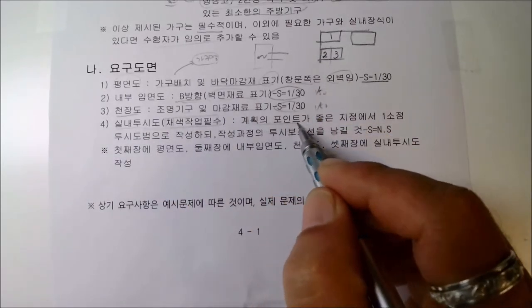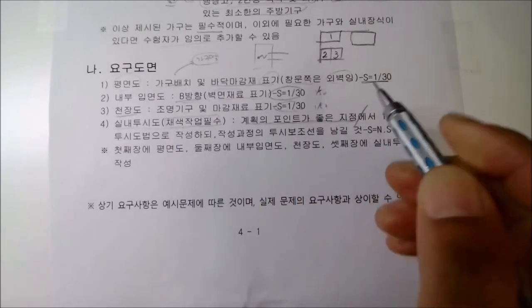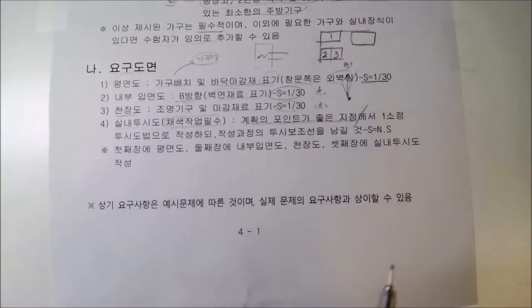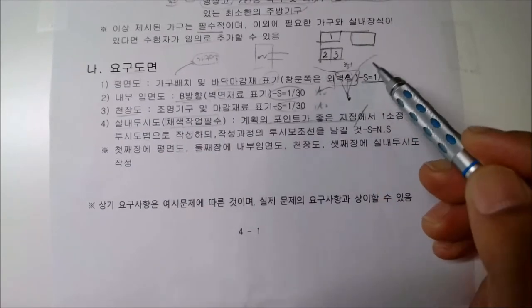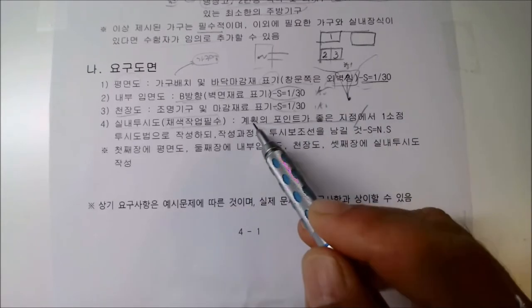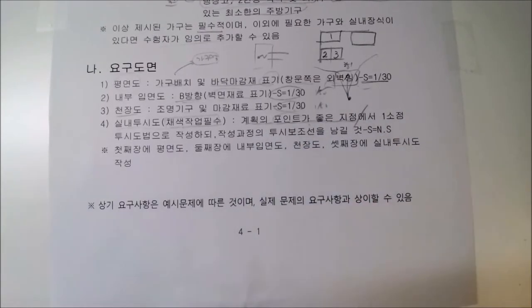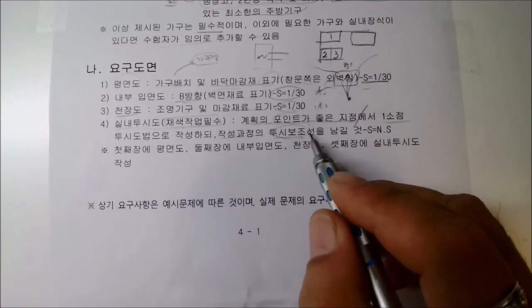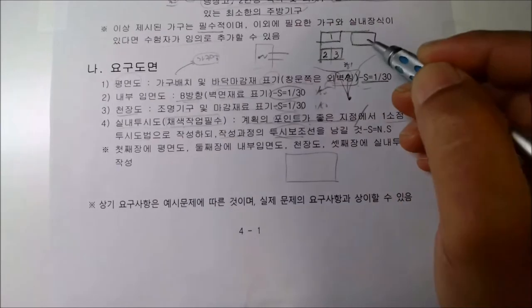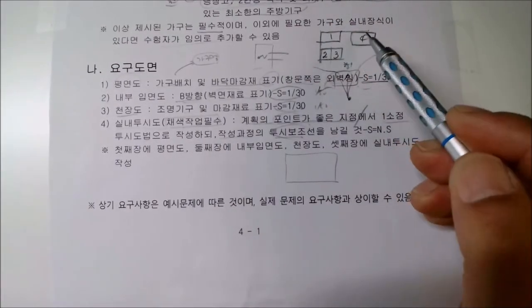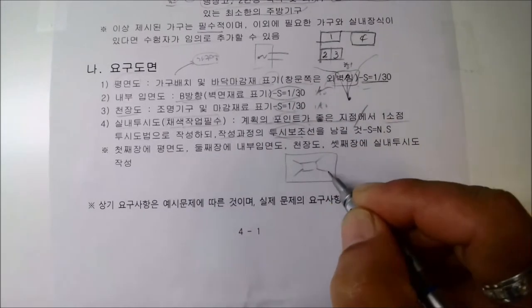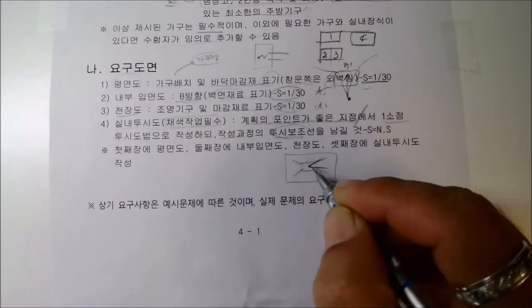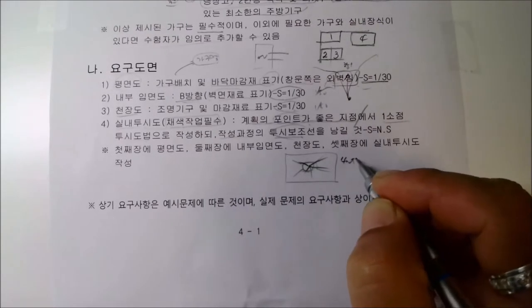실내 투시도는 채색 작업이 필수이며, 계획의 포인트가 좋은 지점에서 그립니다. 보통 창쪽을 향해 그리는데, 창쪽 벽에 가구가 많지 않아 양옆 가구만 표현하면 되어 훨씬 편합니다. 1소점 투시도법을 사용하며, 투시 보조선을 최소 4~5개 남겨야 합니다.